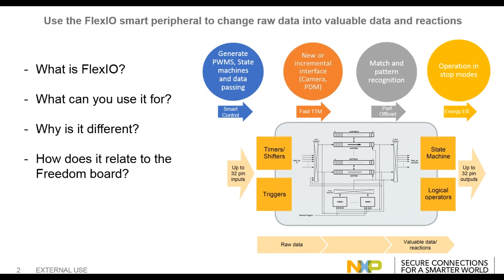The Freedom Board is NXP's development platform for Kinetis MCUs — our Arduino form factor board that allows expansion with partner modules and additional sensors. FlexIO is available on a number of chips, but why did we choose the Freedom K82F? For Internet of Things applications, there are many challenges. Handling input and output of data is one aspect, but there's also the challenge of where to store data. The Freedom K82F comes with 32 megabits of serial NAND flash to store data, and cryptographic accelerators for securing your design.